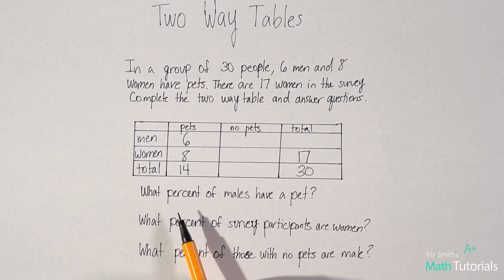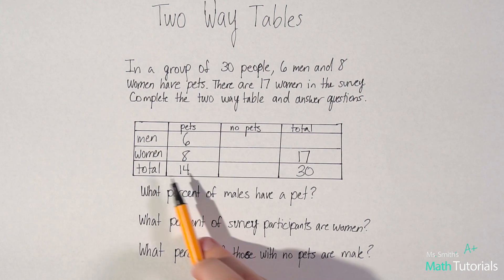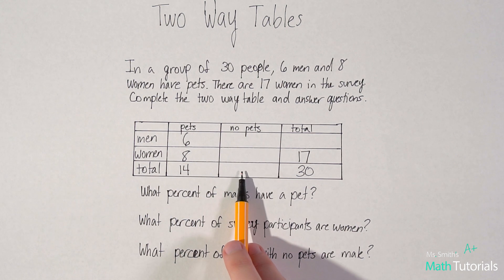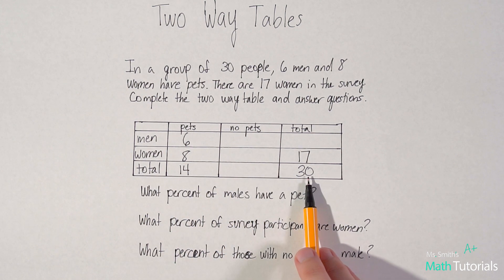All right. And once I know that, if I know that there are 14 people with pets, I don't know how many people don't have pets, but I do know I have a total of 30 people.